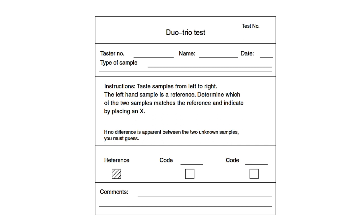Here you can see the ballot sheet of the Duo-Trio test. There is a reference sample and two coded samples, and you should give instructions to the panelist.